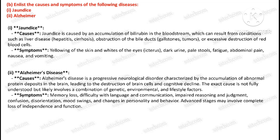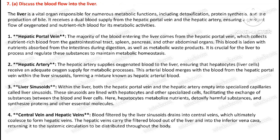The second part of question six is: list the causes and symptoms of the following diseases — jaundice and Alzheimer's. Question number seven, first part: discuss the blood flow into the liver.